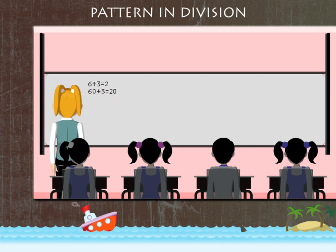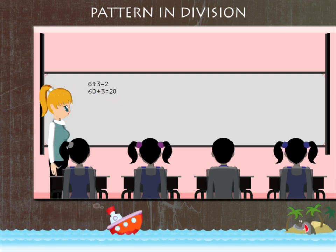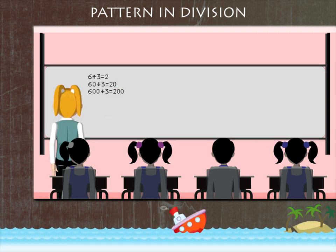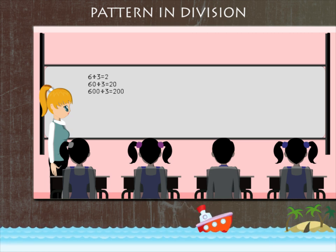60 divided by 3 is equal to 20. It's easy to follow. 600 divided by 3 is equal to 200.